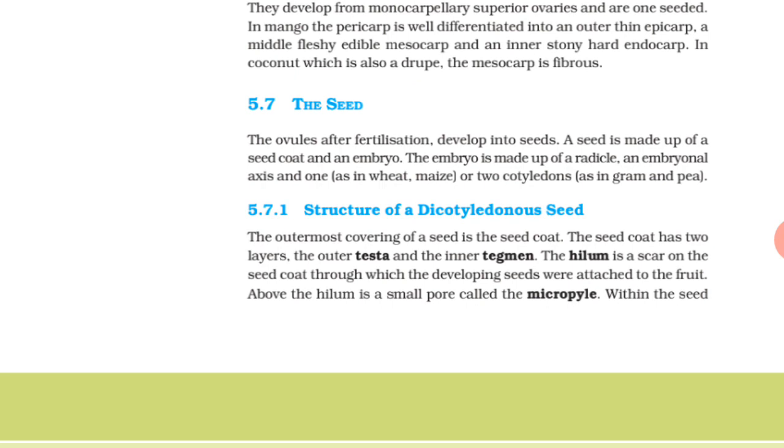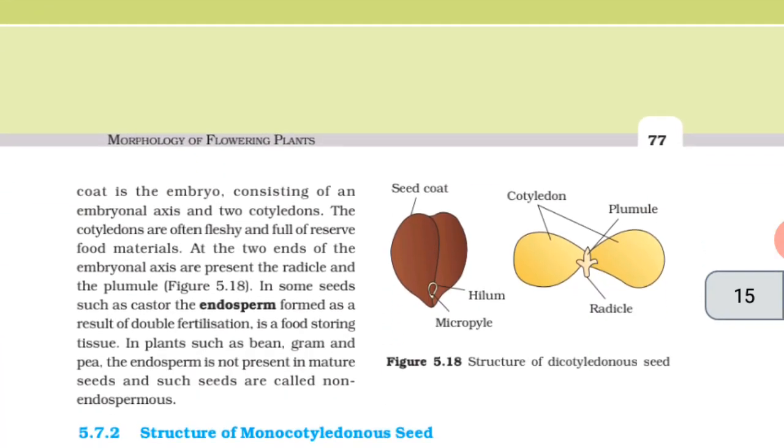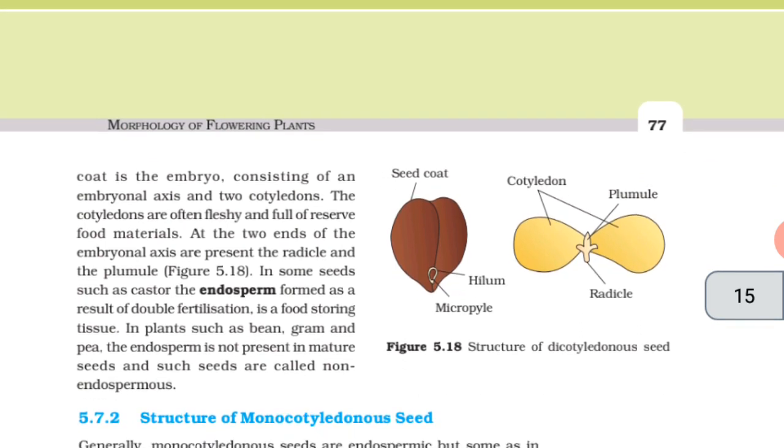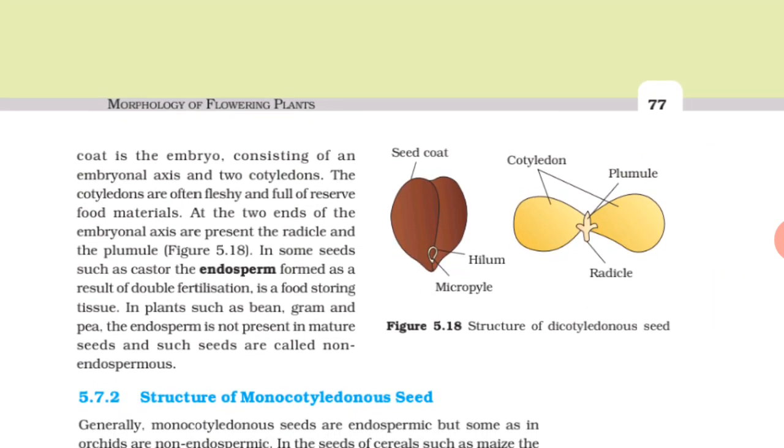Above the hilum is a small pore called the micropyle. Within the seed coat is the embryo consisting of an embryonal axis and two cotyledons. The cotyledons are often fleshy and full of reserve food materials. At the two ends of the embryonal axis are present the radicle and the plumule. In some seeds such as castor, the endosperm formed as a result of double fertilization is the food storing tissue. In plants such as bean, gram and pea, the endosperm is not present in mature seeds and such seeds are called non-endospermic.